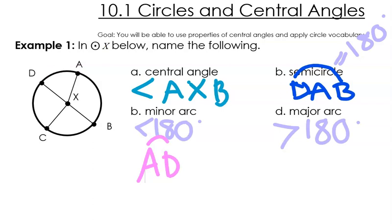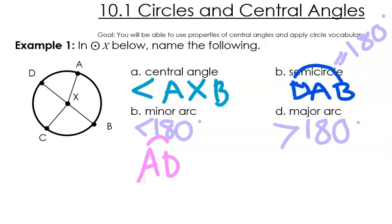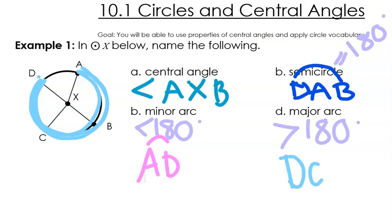Something that is a major arc has to go more than halfway around the circle, and it uses three letters. So what if I wanted to go all the way from here to here? I can name this lots of different ways. I don't need to say D, C, B, A — I'm going to say maybe D, C, A, or I could call it D, B, A. And don't forget that notation, that little arc that goes on the top of it.